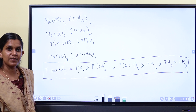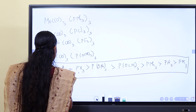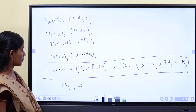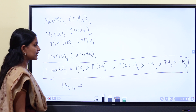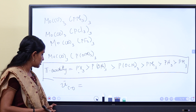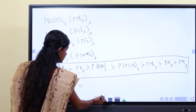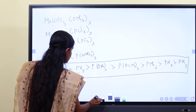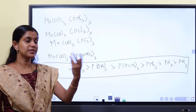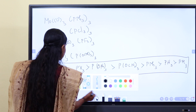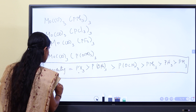So you can use the pi-acidity order: PF3, PCl3, PBr3, PI3. PBr3 — the sigma-donor is weakest and the pi-acceptor is strongest in this series. The pi-acidity order and sigma-donor order are inverse.